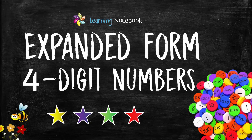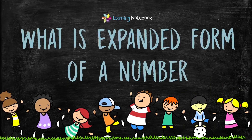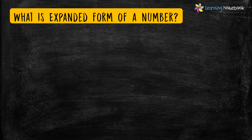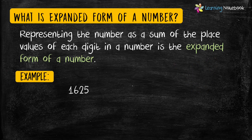Hello students, welcome to our channel Learning Notebook. In today's video we will learn how to write the expanded form of four-digit numbers. Let's start and first understand what is meant by expanded form of a number. Representing the number as a sum of the place values of each digit in a number is called the expanded form of a number. Let's understand it with the help of a four-digit number: 1625.